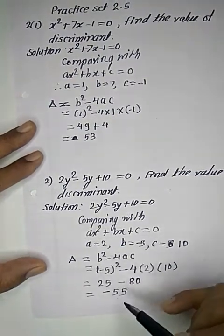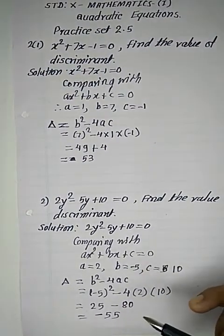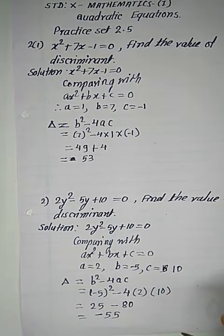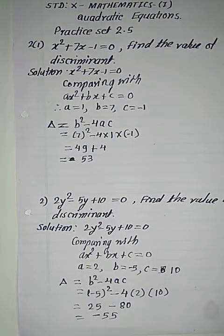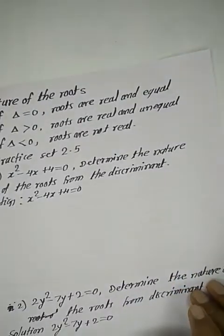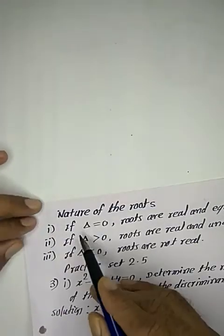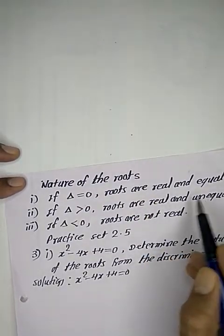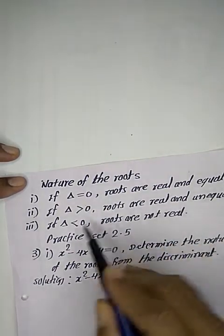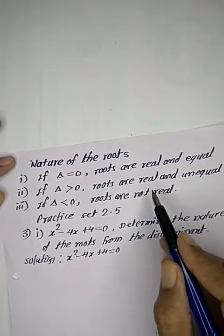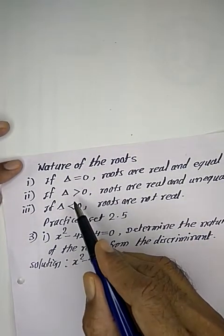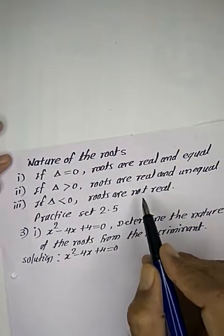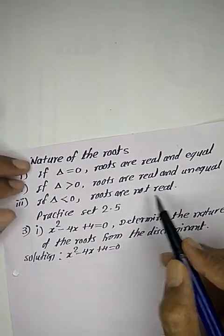Now you will encounter questions asking whether the discriminant is positive or negative, less than zero or greater than zero. This is called the Nature of the Roots. Let's look at the third question. If discriminant is zero, roots are real and equal. If discriminant is greater than zero or positive, roots are real and unequal. If discriminant is negative, roots are not real.